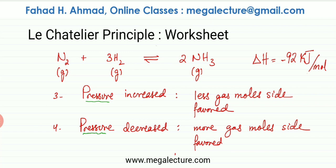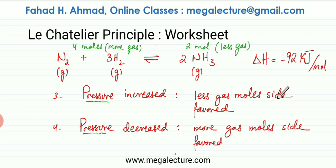In this reaction, there is one N2 and three H2, so there are four moles of gas on the reactant side. In the product, there are only two molecules of NH3, so there are two moles of gas. If you increase pressure, the less gas mole side is favored, which means the reaction goes in the forward direction — forward reaction is favored. If you decrease pressure, the more gas mole side is favored, so more N2 and H2 are produced. That is Le Chatelier's principle for pressure.